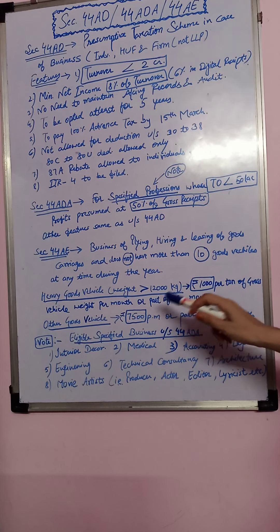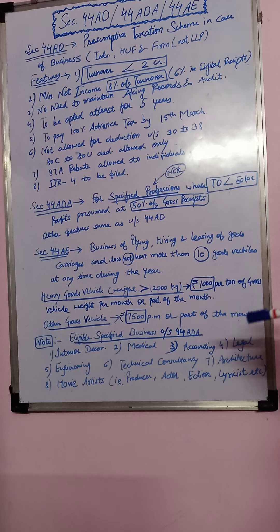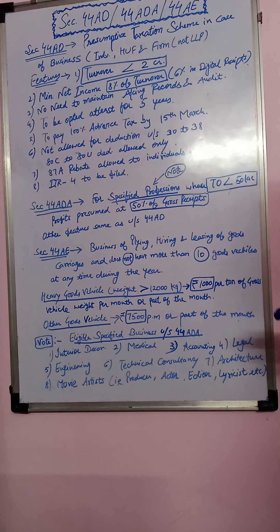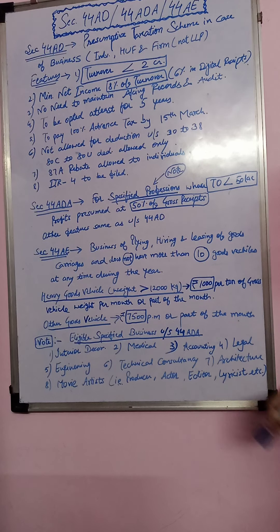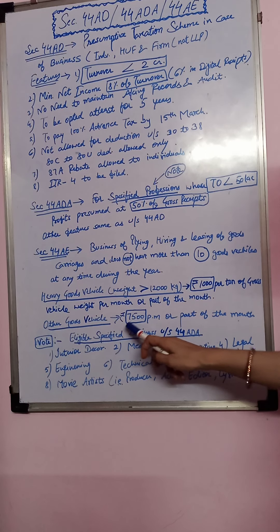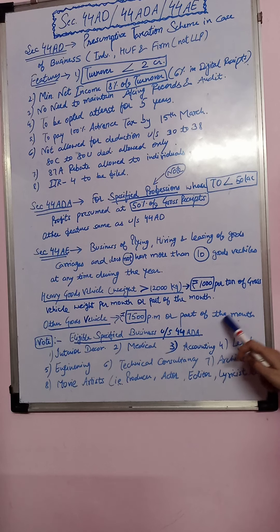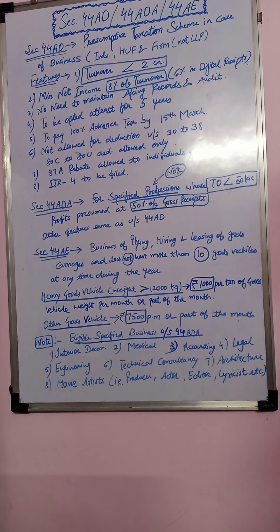I have no space here, this is why I can't mention it. Multiply by the number of goods vehicle. Rs. 1000 per ton for the month or the part of the month. Even if it's for part of a month, it will be calculated. Next, other goods vehicle: Rs. 7500 per month or part of the month. You have to keep this in mind.